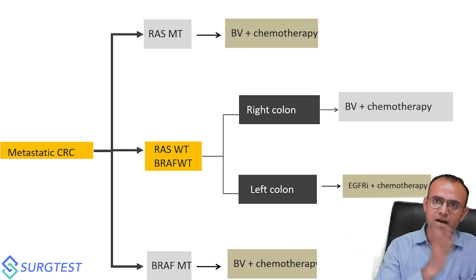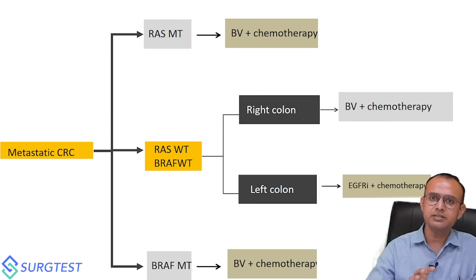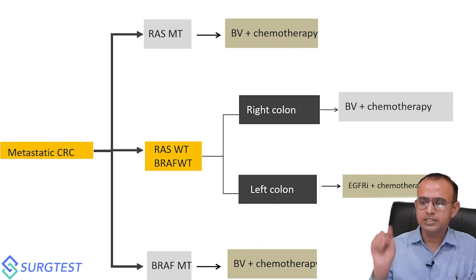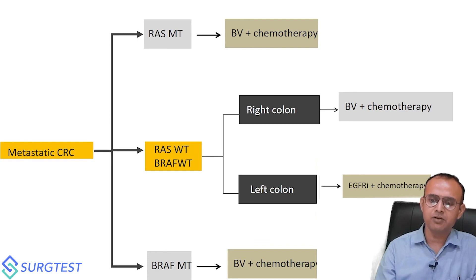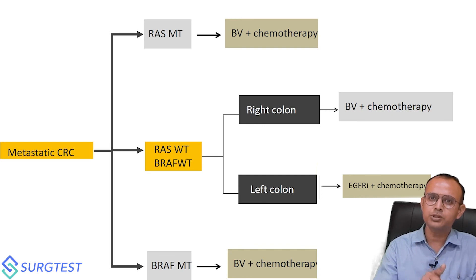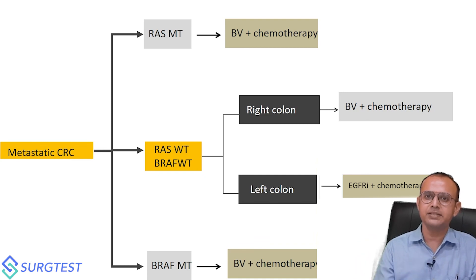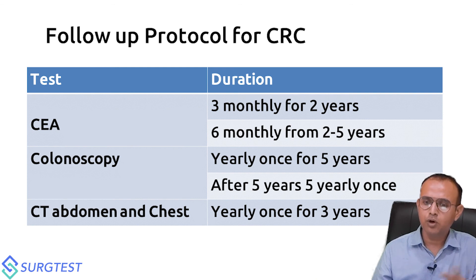Tumor sidedness also matters: for right-sided colon cancer, bevacizumab is preferred even in wild-type patients. For left-sided colon cancer with RAS wild type and BRAF wild type, EGFR inhibitor plus chemotherapy is recommended. So for metastatic stage four, if mutant at RAS and BRAF, there is no role for panitumumab or cetuximab. Only RAS wild type, BRAF wild type, left-sided tumors should receive EGFR inhibitor combined with FOLFOX or FOLFIRI.